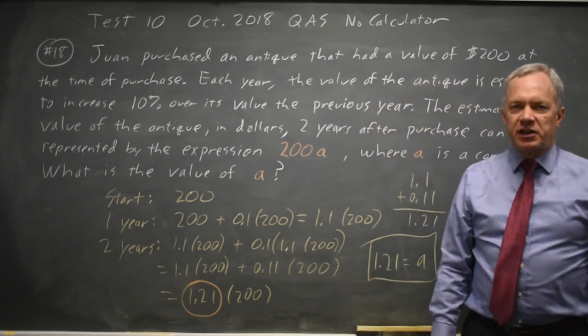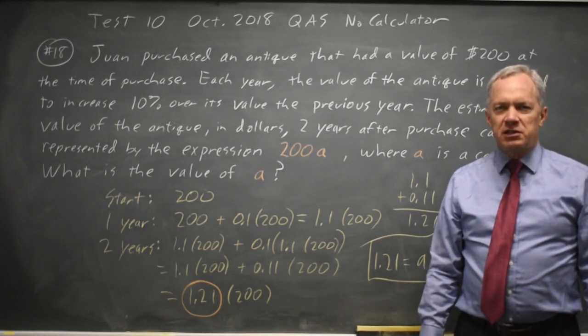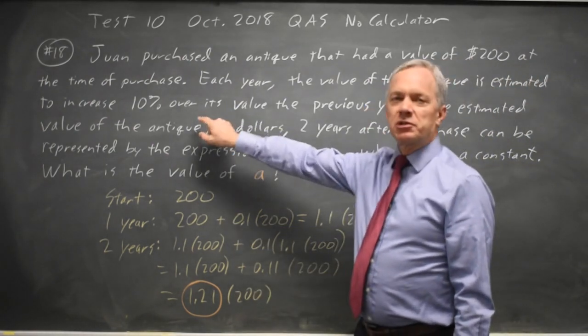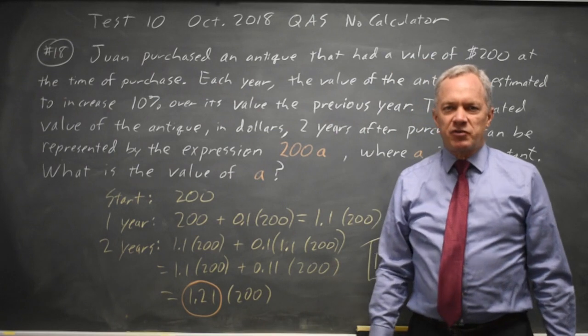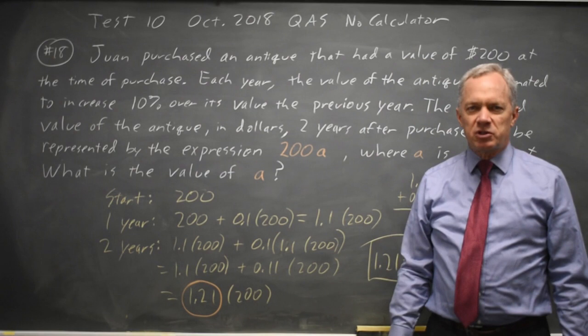The College Board often asks about exponential growth or about distinguishing linear growth from exponential growth. So read these carefully, especially whether the increase is a percent of the starting value, which would be linear, the same as a fixed amount each year, or a percent of the most recent value, which makes it exponential.